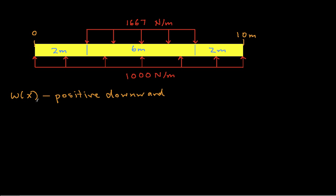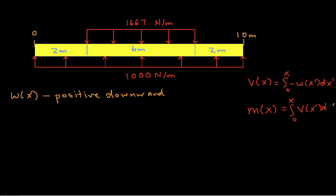The first thing we'll do is find w(x). The important relationships are: v(x) is the integral from 0 to x of minus w(x') dx', and m(x) is the integral from 0 to x of v(x') dx'. We'll use these relationships to get the shear force and the bending moment for this beam from the loading density or weight density.